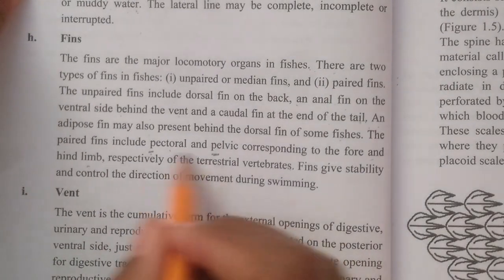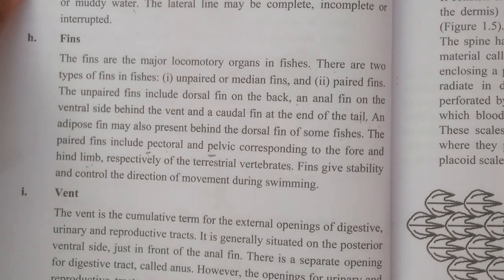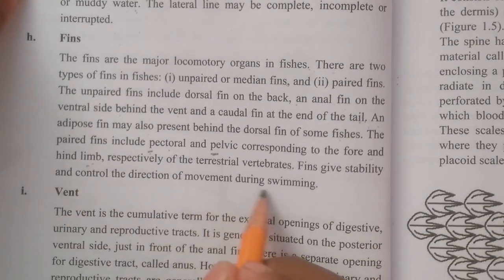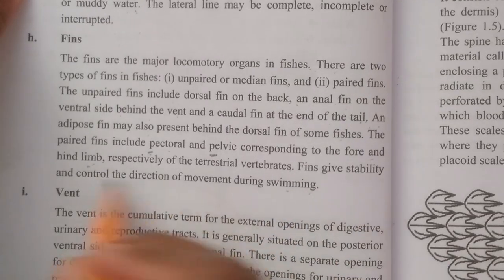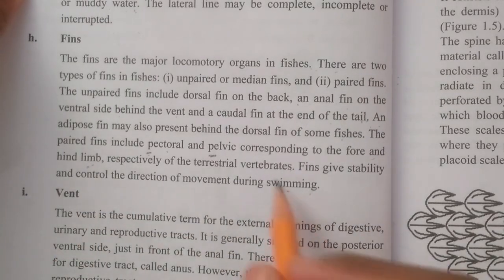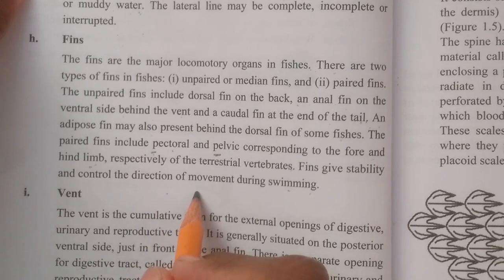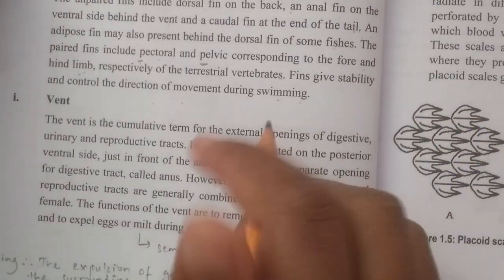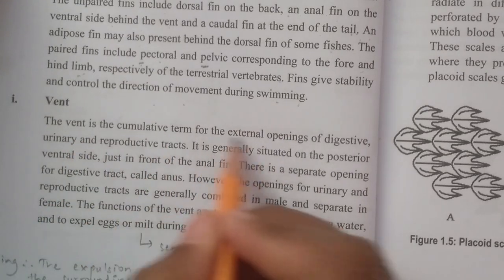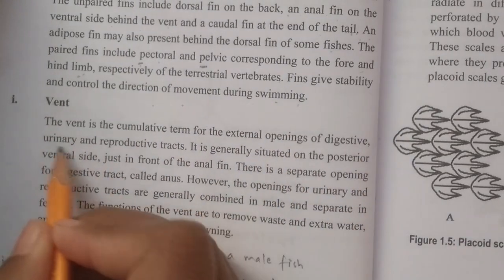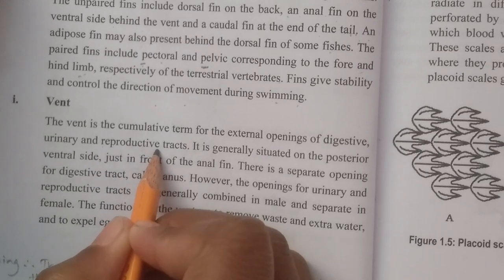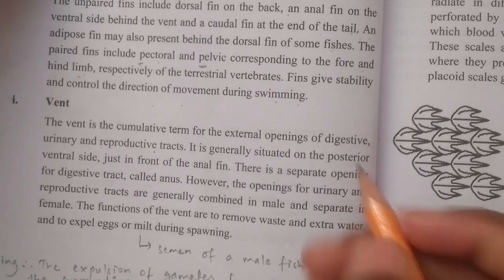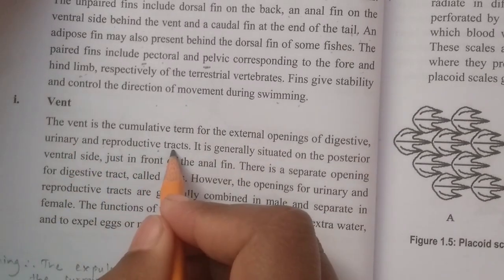The paired fins include the pectoral and pelvic fins, corresponding to the fore and hind limbs respectively. The fins give stability and control the direction of movement during swimming. The vent is the collective term for the external opening of the digestive, urinary, and reproductive tracts.